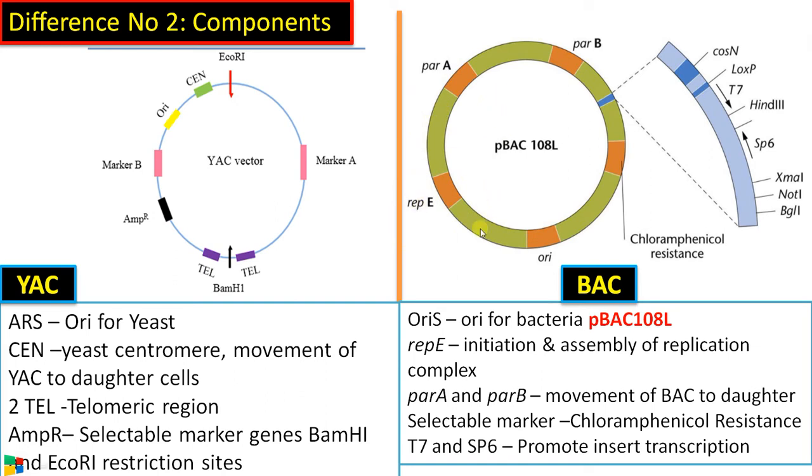Then there is parA and parB which is called as partition A and partition B, that is essential for movement of BAC vectors to daughter cells, just like centromeric regions in YAC vector. Then there are selectable markers, chloramphenicol resistance region, that is essential for selection of transformed cells.